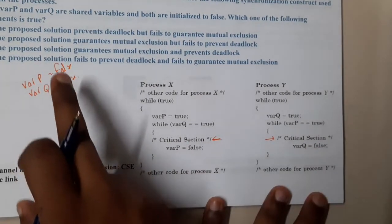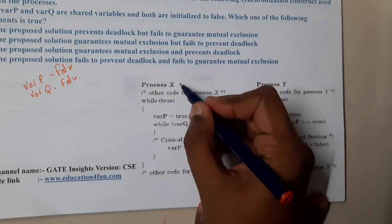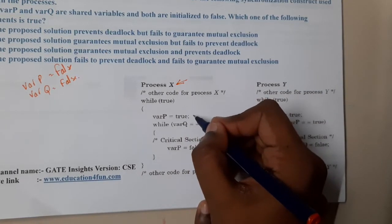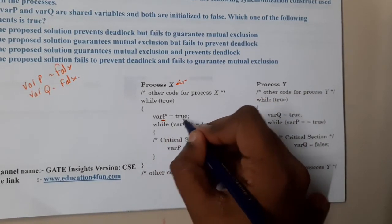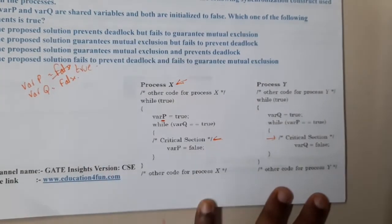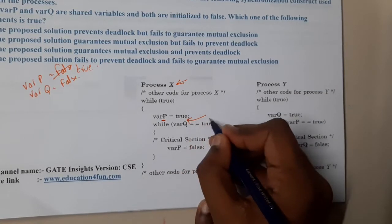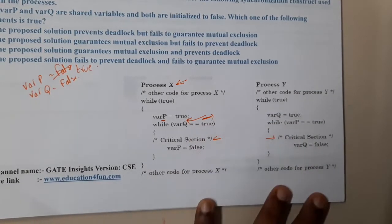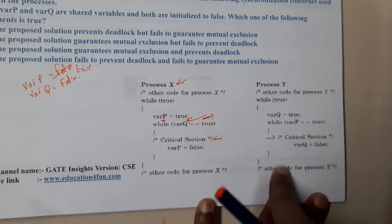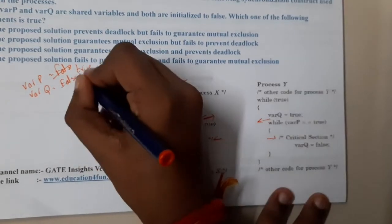The initial values for both of them is false. Once process X wants to execute, it will come inside and change varP equal to true. Assume that here we are going to do context switching. So once we perform a context switching here, this process will start executing. Let us assume here again we perform context switching, so basically we are converting this also to true.